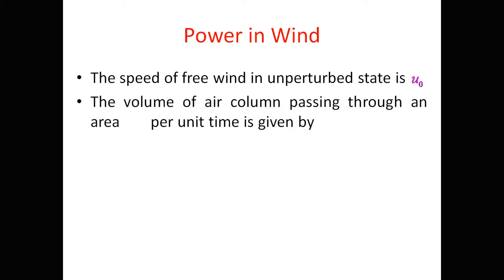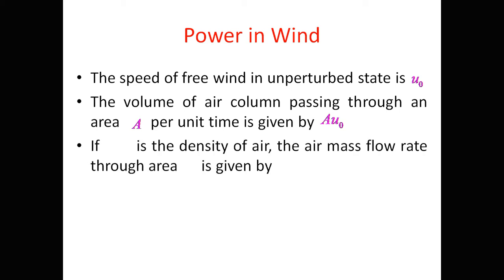The volume of air column passing through an area A per unit time is given by A·u₀. The speed of free wind is u₀ and the area of the air column is capital A, so to calculate the volume we multiply the area by the wind speed in the unperturbed state, giving volume = A·u₀.